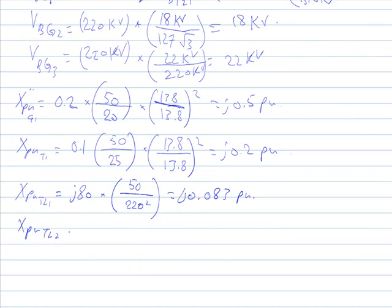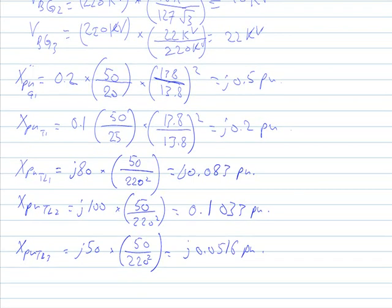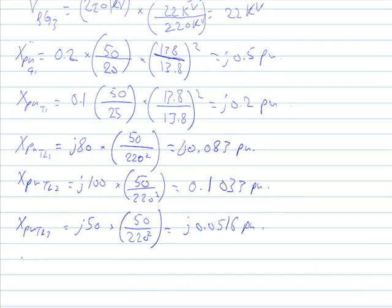The per-unit value of transmission line number two is j0.092 per unit, and transmission line number three is j50 multiplied by 50 over 220 squared, giving j0.05116 per unit.